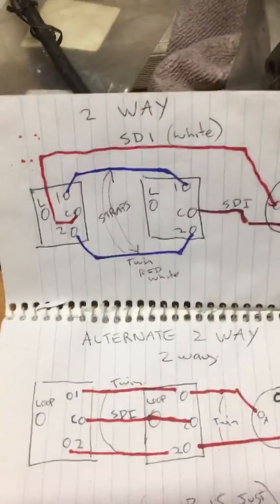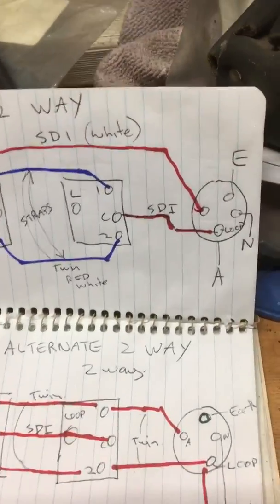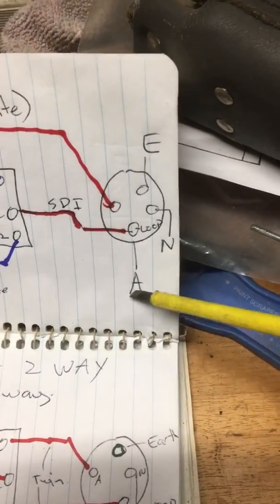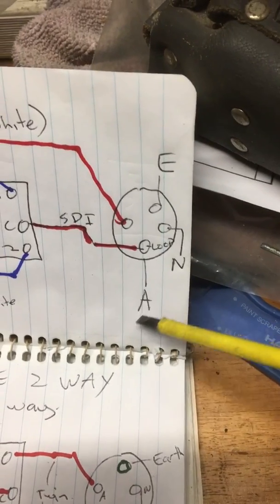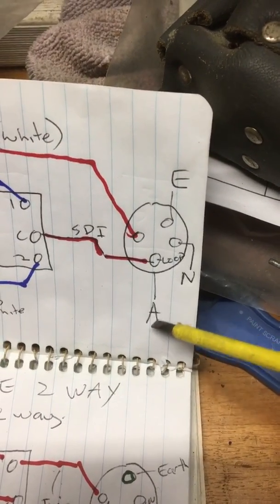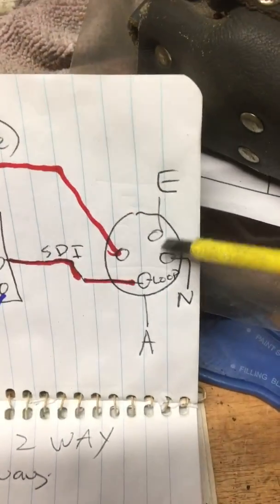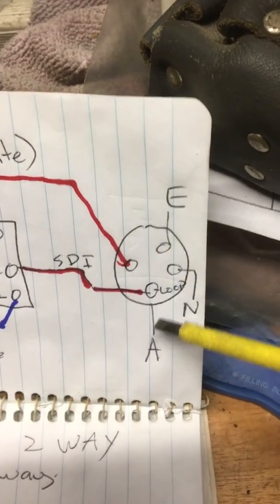Your normal two-way switching. You got your light fixture coming in from the switchboard or a junction box. This constant active coming into your loop, that's your neutral, and switch wire. Your active constant coming from the switchboard, looped.